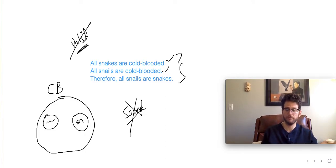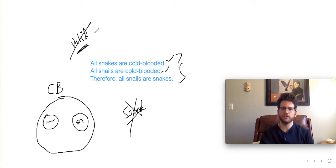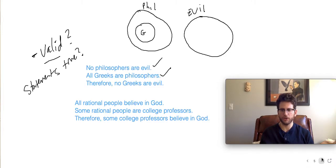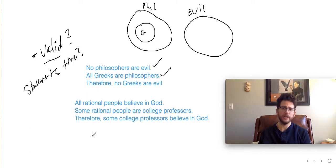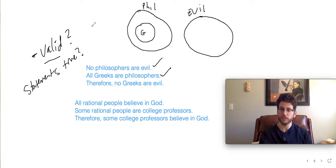To recap: you can have false statements organized in the right way — still a bad argument. And as we saw with snakes and snails, you can have true statements not organized validly. Either way, it's not a sound argument. Try the last philosophers example on your own — it's tricky because it's got both 'all' and 'some.'